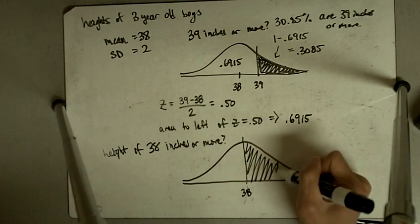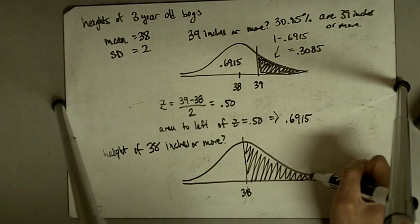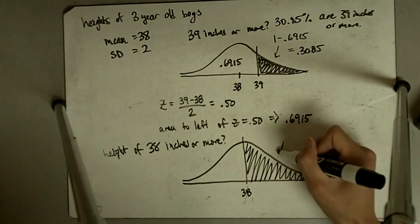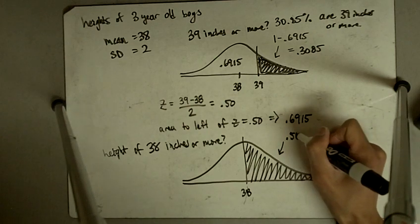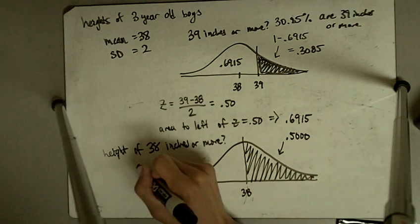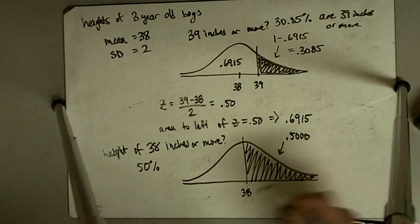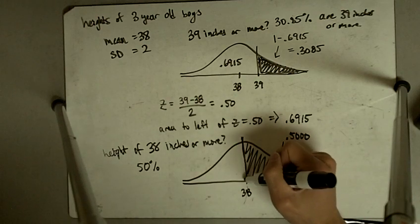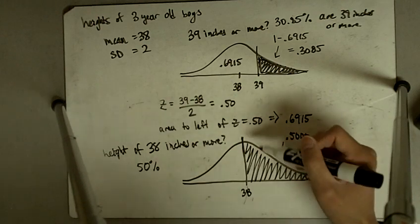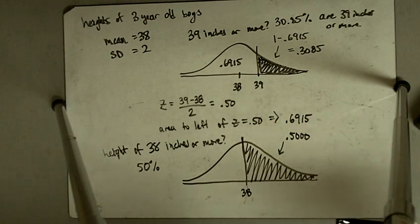So what percent is going to be 38 inches or more? Now we know that the answer there is going to be exactly 50%. Because half are going to be taller, and half are going to be shorter. For the normal distribution, the mean is right in the middle, and so half are taller, half are shorter.